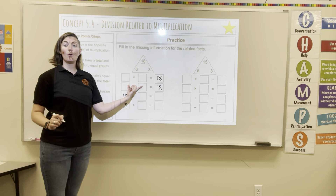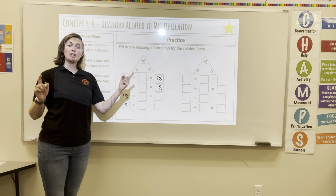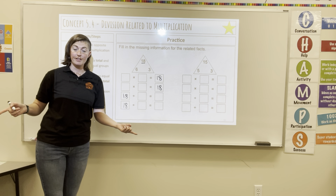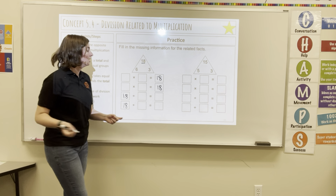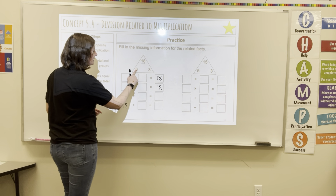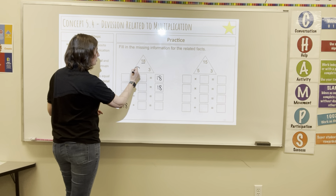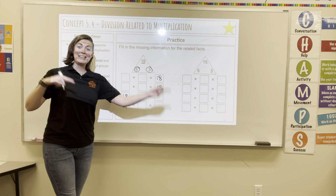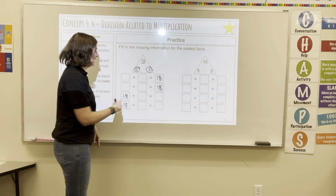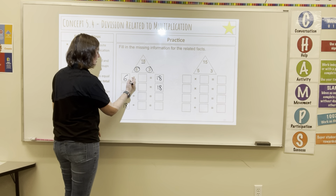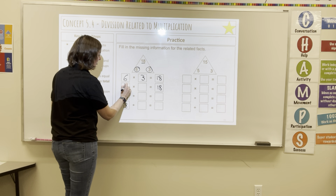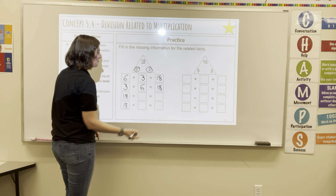Now for multiplication, you can switch your factors around — that's called the commutative property of multiplication. So I know that six and three are my small numbers that can get to 18. I can do six times three and three times six.